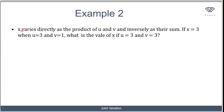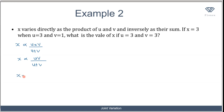In this example, x varies directly as the product of u and v, and inversely as their sum. Writing this out: x is proportional to u times v over (u plus v) — directly proportional to the product u·v and inversely proportional to the sum u + v. Removing the proportionality sign and adding the constant, we get x equals k times uv over (u plus v), where k is the constant of proportionality.